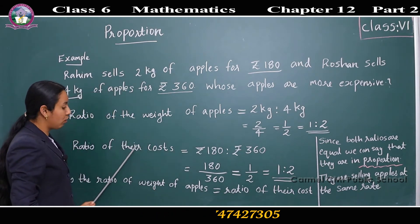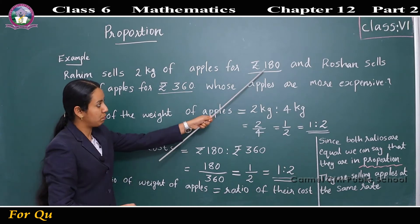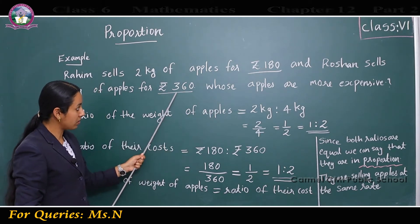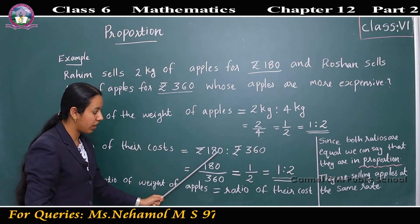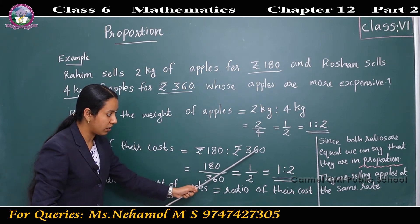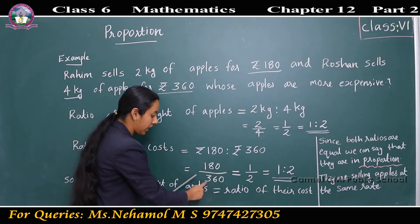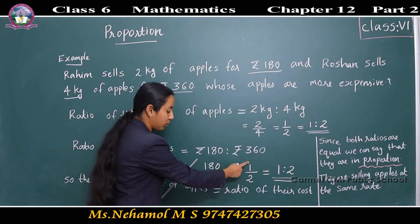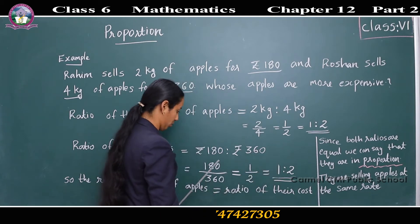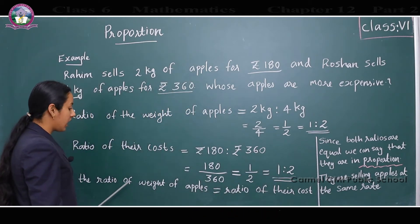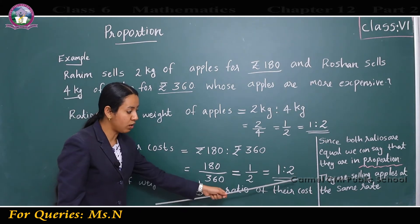The ratio of their costs is rupees 180 is to rupees 360. That is equal to 180 by 360, which is also equal to 1 by 2, that is 1 is to 2. So the ratio of weight of apples is equal to the ratio of their costs.